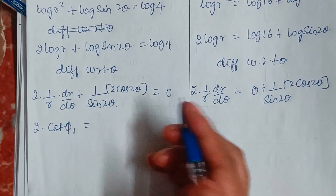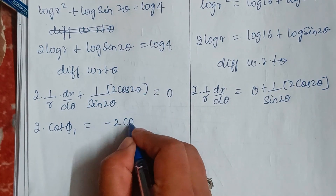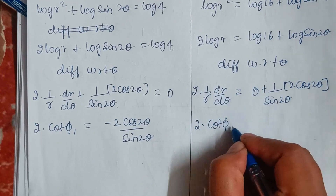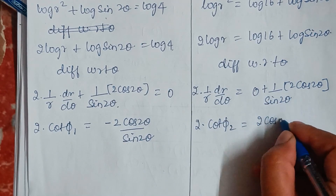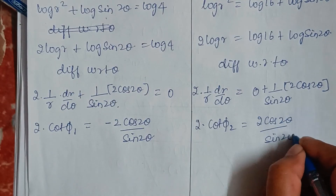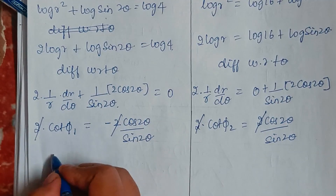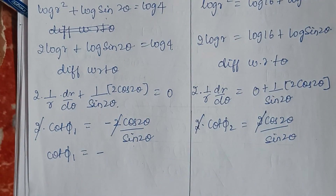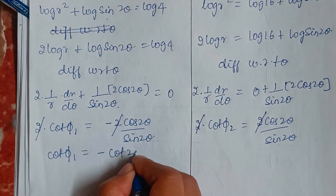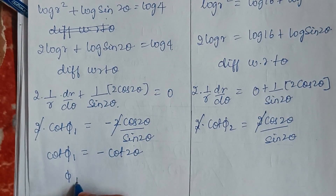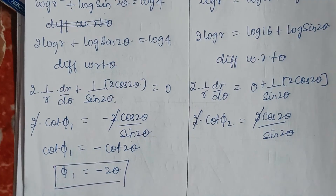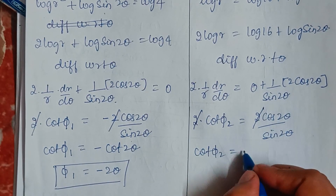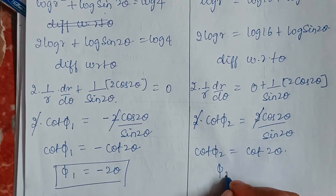Taking terms to the other side, cot φ₂ = 2cos(2θ)/sin(2θ). The 2s cancel, giving cot φ₁ = −cot(2θ), so φ₁ = −2θ. And cot φ₂ = cot(2θ), so φ₂ = 2θ.